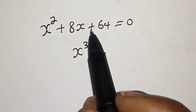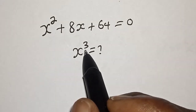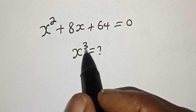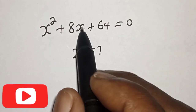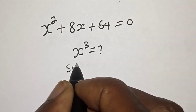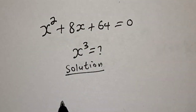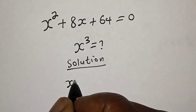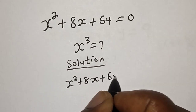s² + 8x + 64 is equal to 0. What is the value of s³? Hi everyone, welcome to my class. In this class we want to find the value of s³ from this given equation. Please don't forget to like, share, comment, and subscribe.